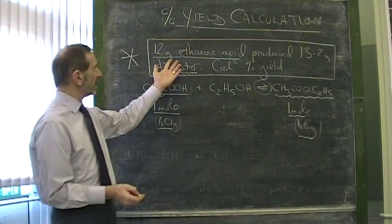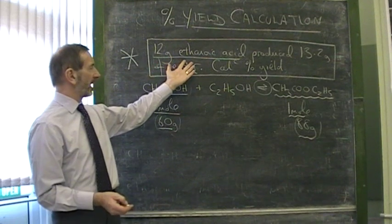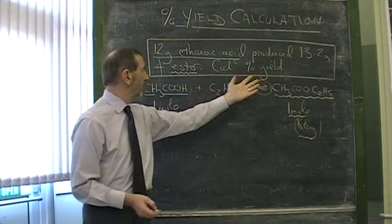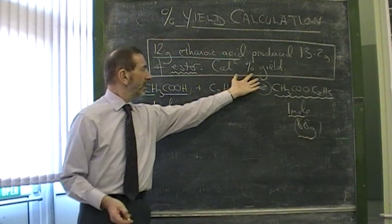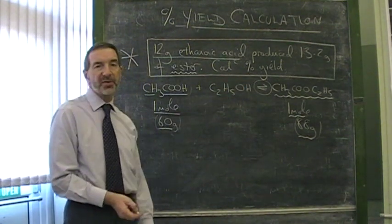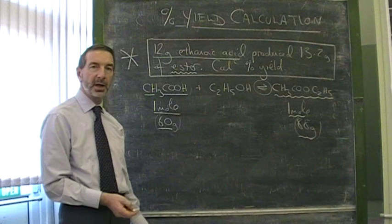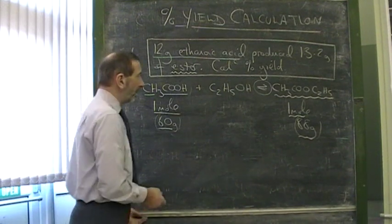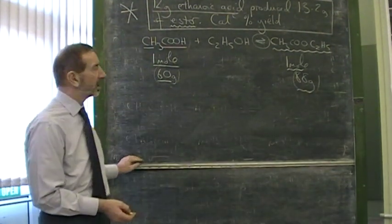It asks us that if 12 grams of ethanoic acid produced 13.2 grams of the ester, calculate the percentage yield. How successful was that? Does that represent complete success or complete disaster or somewhere in between? Well you're usually given some help with this calculation.